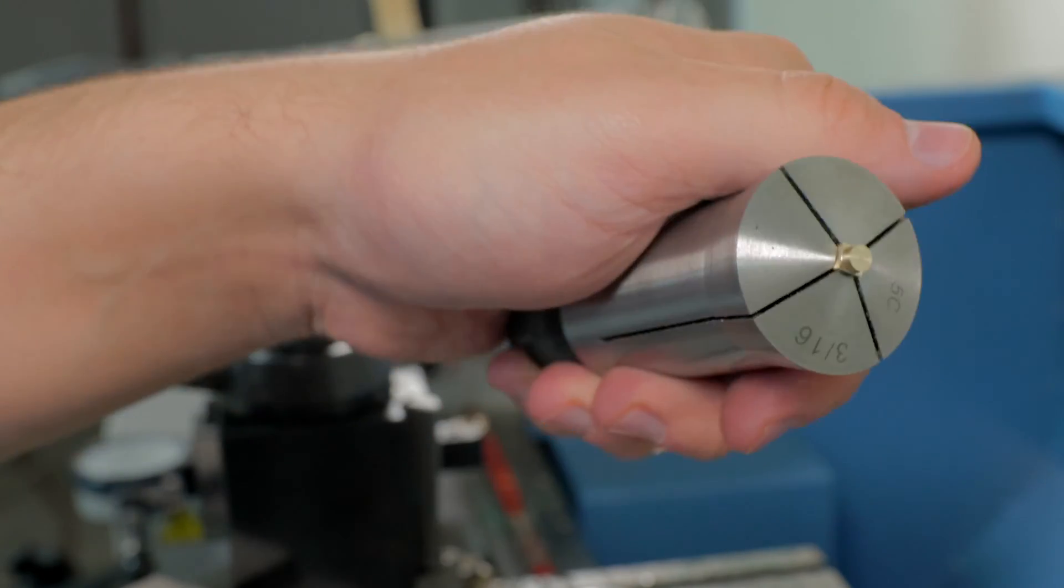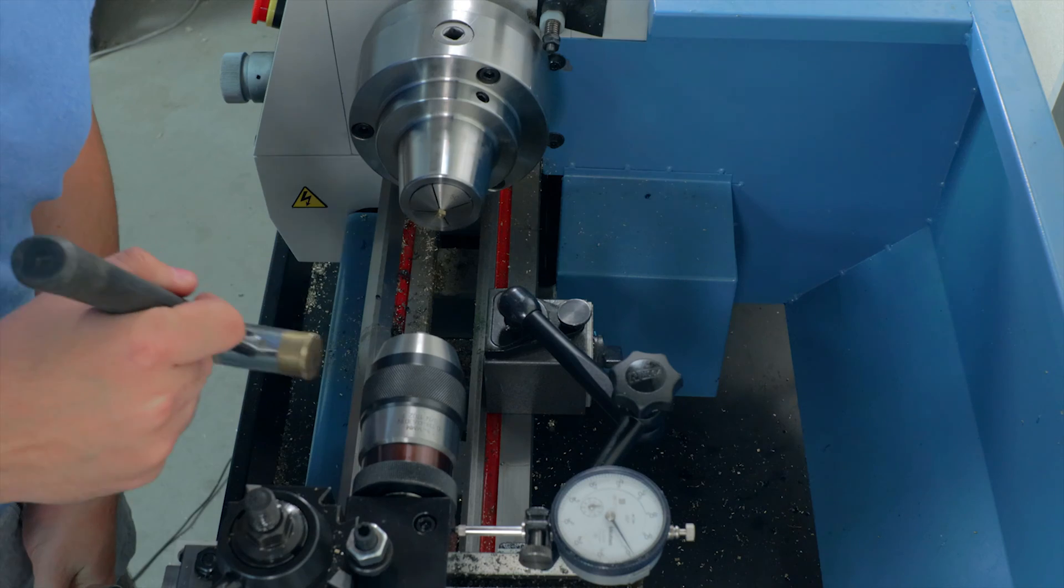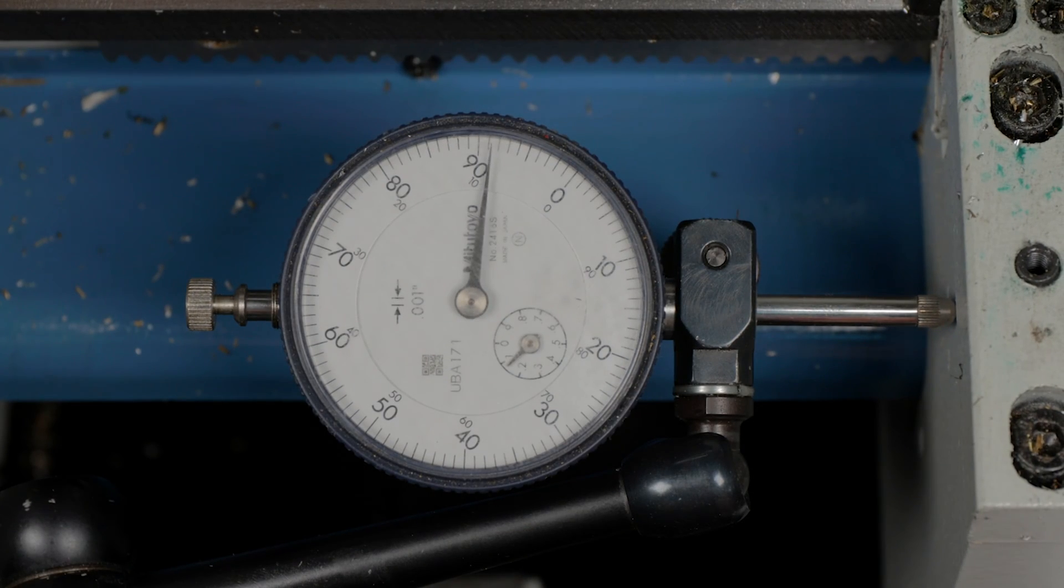Now the pin can be inside the collet and hit the stop without falling inside. Next I set up a drill chuck on the carriage. This will make it easier to use a dial indicator to drill to the correct depth.